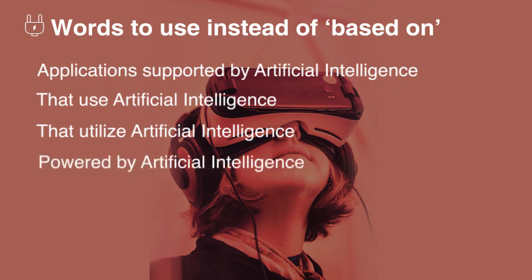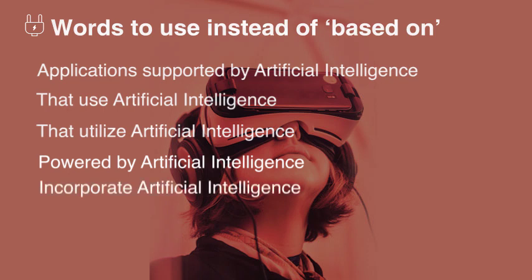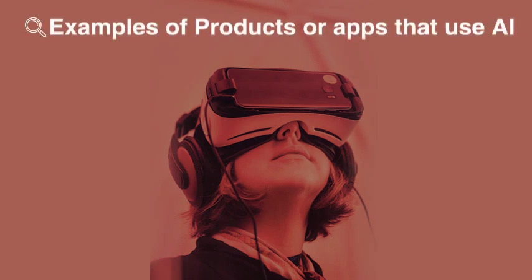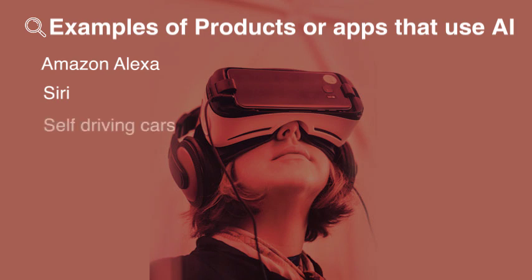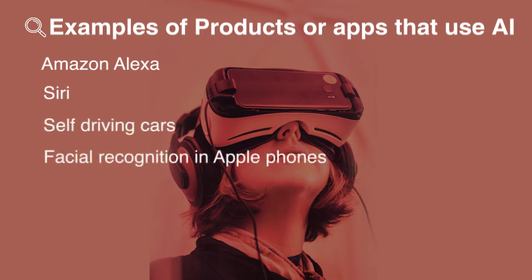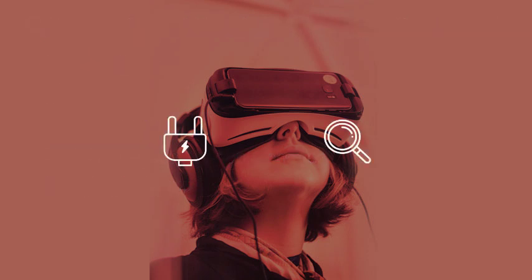So what are some products and applications that use artificial intelligence? You can talk about Amazon's Alexa, Apple's personal assistant Siri, self-driving cars, the facial recognition system in Apple iPhone X, or the Google Photos app. Now let's move on to our sample answer.